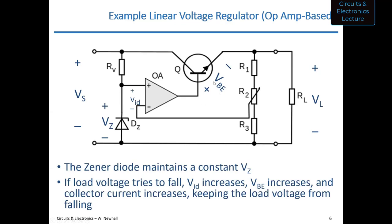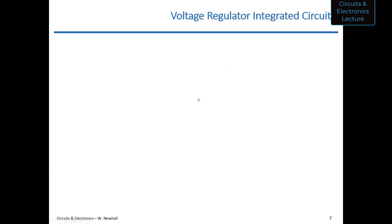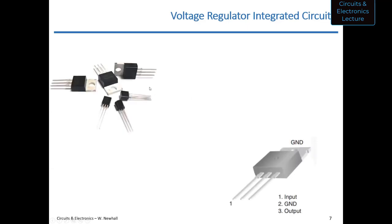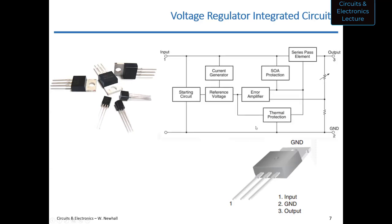This function is available in voltage regulator integrated circuits. Here are some examples — these look like transistors but they're actually voltage regulators with three terminals: input, output, and ground. Looking at the block diagram of one of these chips, it should look like what we just discussed. The reference voltage is generated internally and is based on a zener diode or junction, with a current generator to maintain a constant current through it.